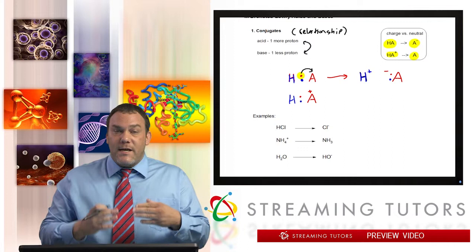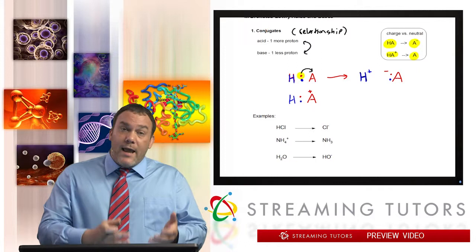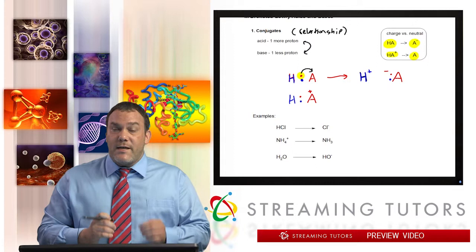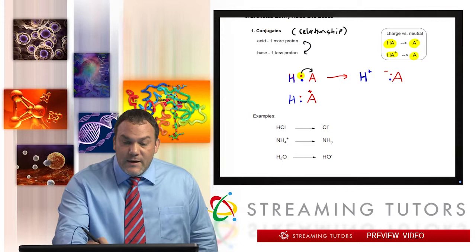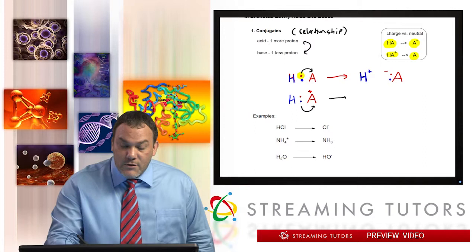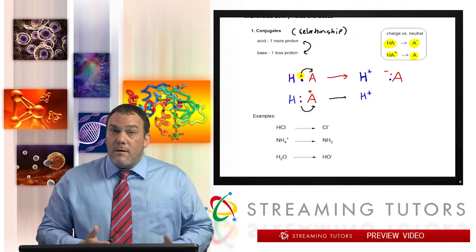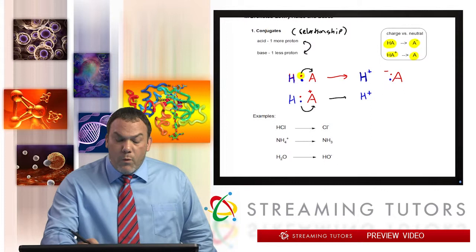And the same thing applies if, let's say we have H, and then we have A, but A is positive. Now, what that means is that A, right now, only owns one of those two electrons in that covalent bond. So the red electron is owned by A, and H owns the blue one. Remember how covalent bonds form by the sharing of electrons. Each atom brings one electron to the table.